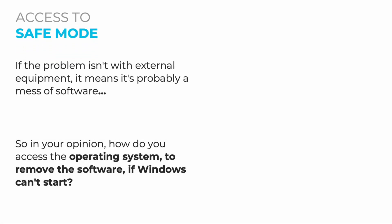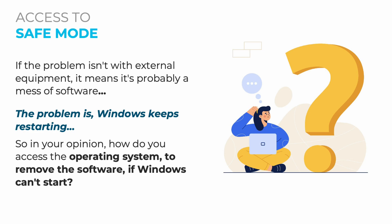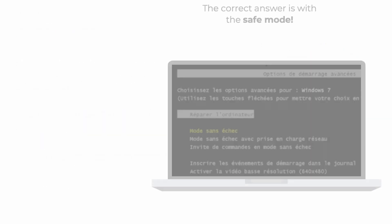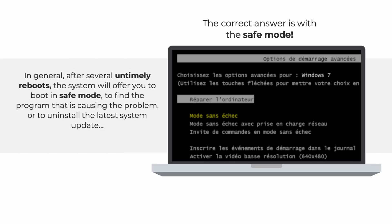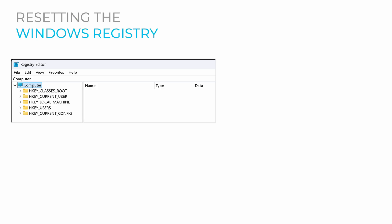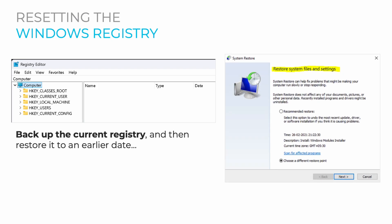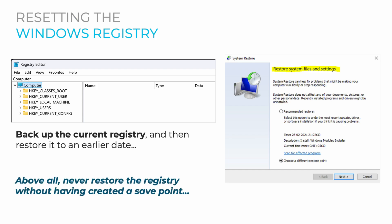If the problem doesn't come from external equipment, it's probably software-related. To access the operating system when Windows can't start, use safe mode. After several untimely reboots, the system will usually offer to boot in safe mode, where you can find the problematic program or uninstall the latest system update. Since you're in safe mode, you can also back up the current registry and restore it to an earlier date — but never restore the registry without first creating a save point.